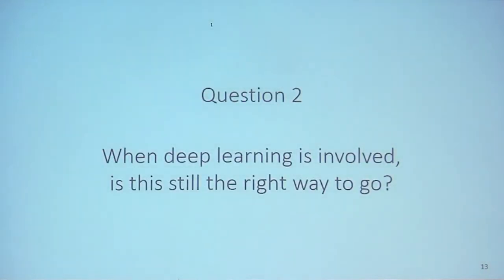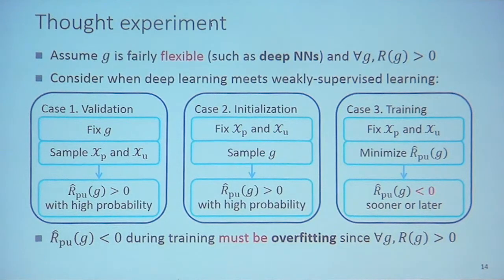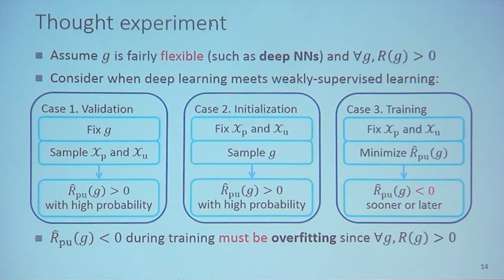Now I will go to the second part: when deep learning is involved, is this still the right way to go? The answer is no. Let's consider a thought experiment. Assume the classifier is fairly flexible, such as a deep neural network, or equivalently any measurable function, and that for any candidate classifier the true risk is positive.